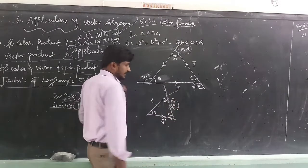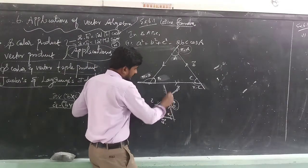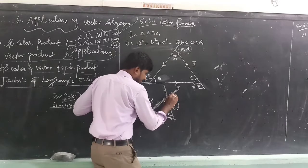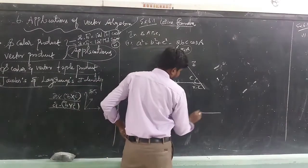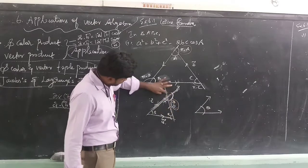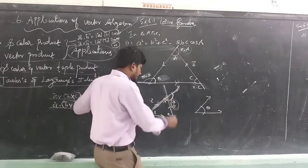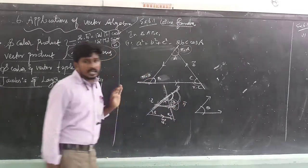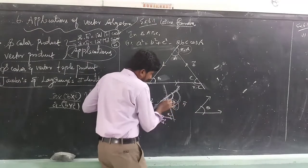Now we consider the angle. If we consider the angle, we will write this angle. How many times do we write this angle? The angle in a straight line is pi. There is a point. So when we write this angle, we have A. The angle is pi minus A.